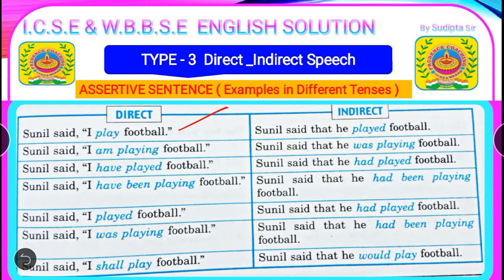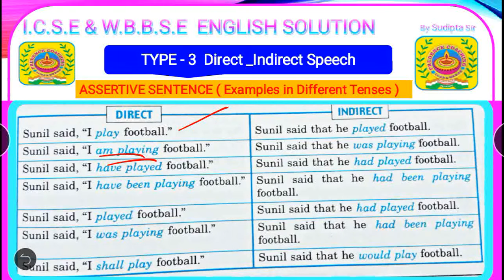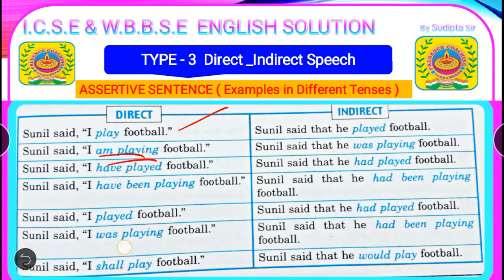Next: 'Sunil said, I am playing football.' — present continuous → past continuous: 'Sunil said that he was playing football.' Next: 'Sunil said, I have played football.' — present perfect → past perfect: 'Sunil said that he had played football.' Next: 'Sunil said, I have been playing football.' — present perfect continuous → past perfect continuous: 'Sunil said that he had been playing football.' Next: 'Sunil said, I played football.' — simple past → past perfect: 'Sunil said that he had played football.' Next: 'Sunil said, I was playing football.' — past continuous → past perfect continuous: 'Sunil said that he had been playing football.' Next: 'Sunil said, I shall play football.' — simple future → future in the past: 'Sunil said that he would play football.'